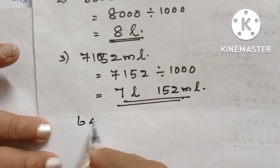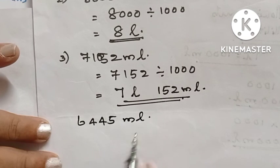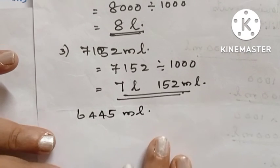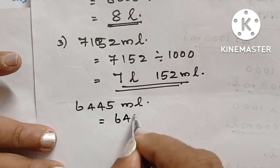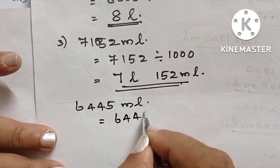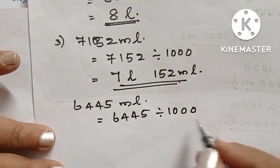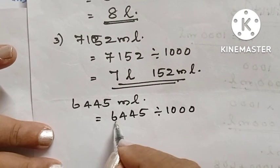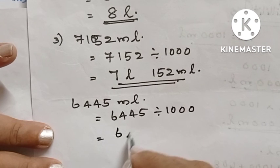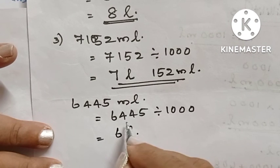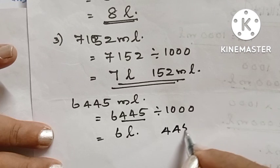The last question is six thousand four hundred and forty-five milliliters. We are converting it into liters, so we divide by one thousand. Thousand has three zeros, so from the right side we take three numbers — that is four hundred and forty-five. Four hundred and forty-five will remain in milliliters and six is the liters. Therefore, the answer is six liters and four hundred and forty-five milliliters.